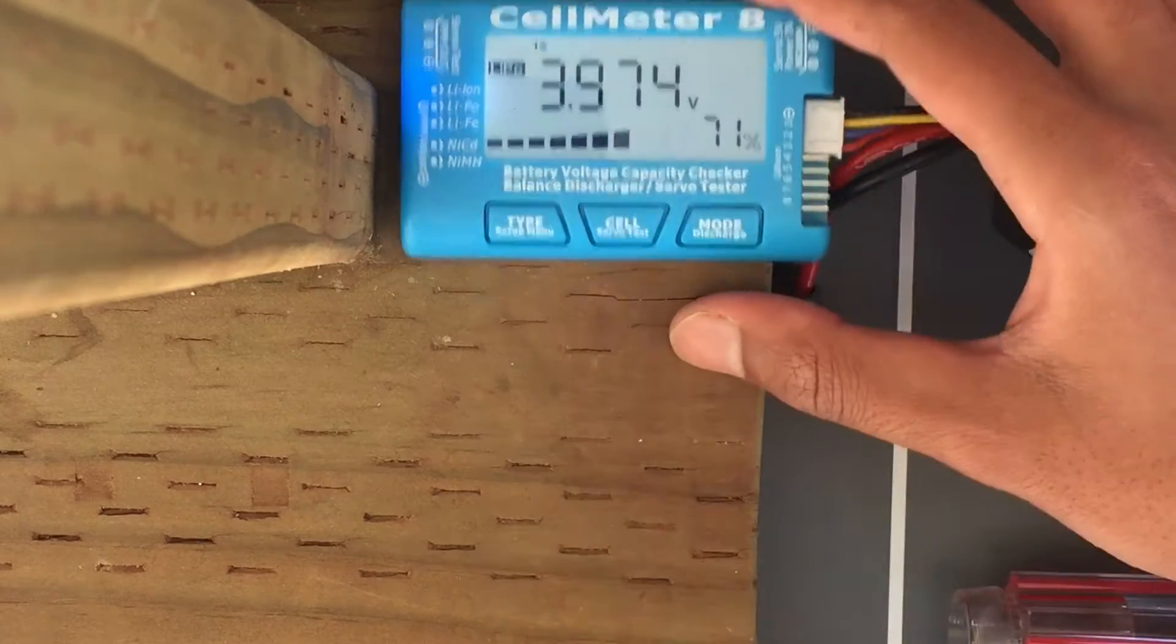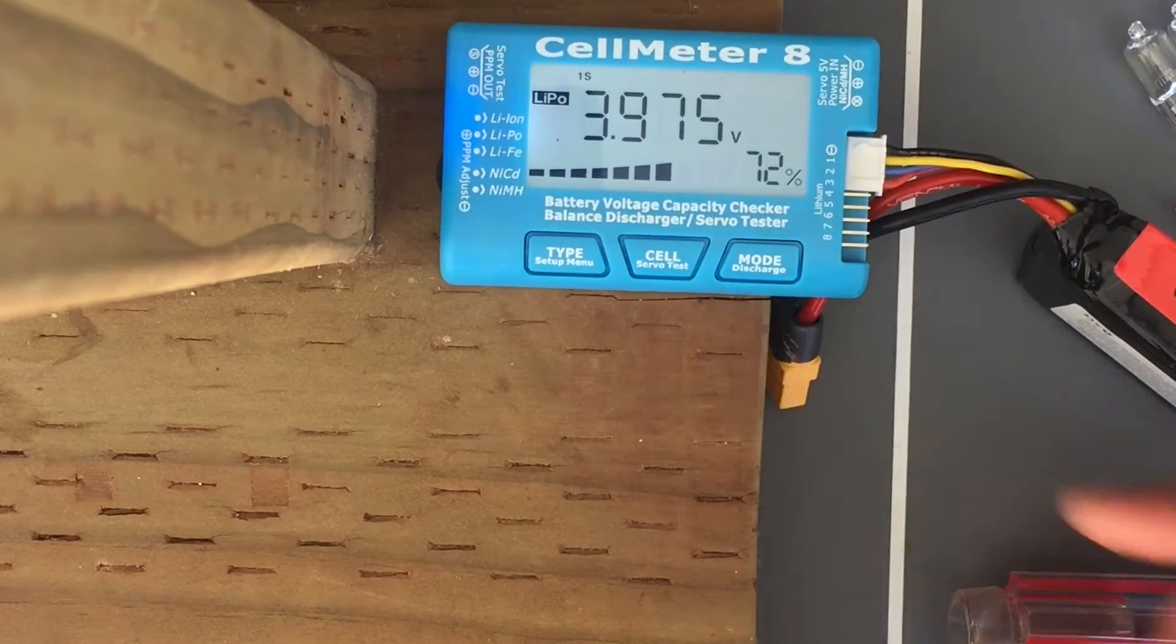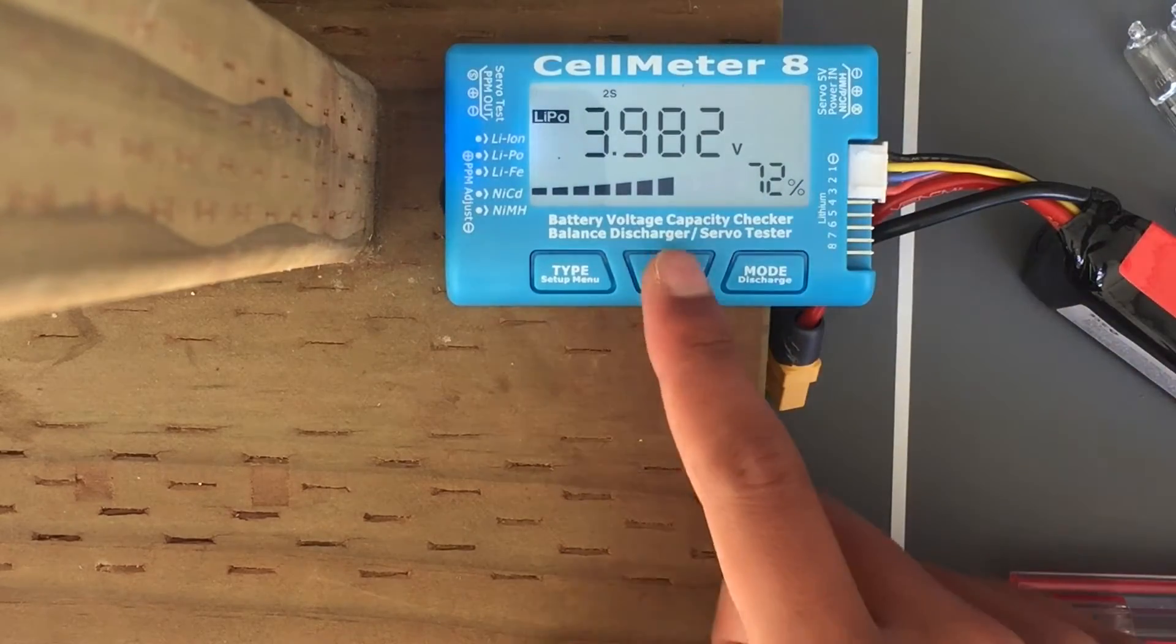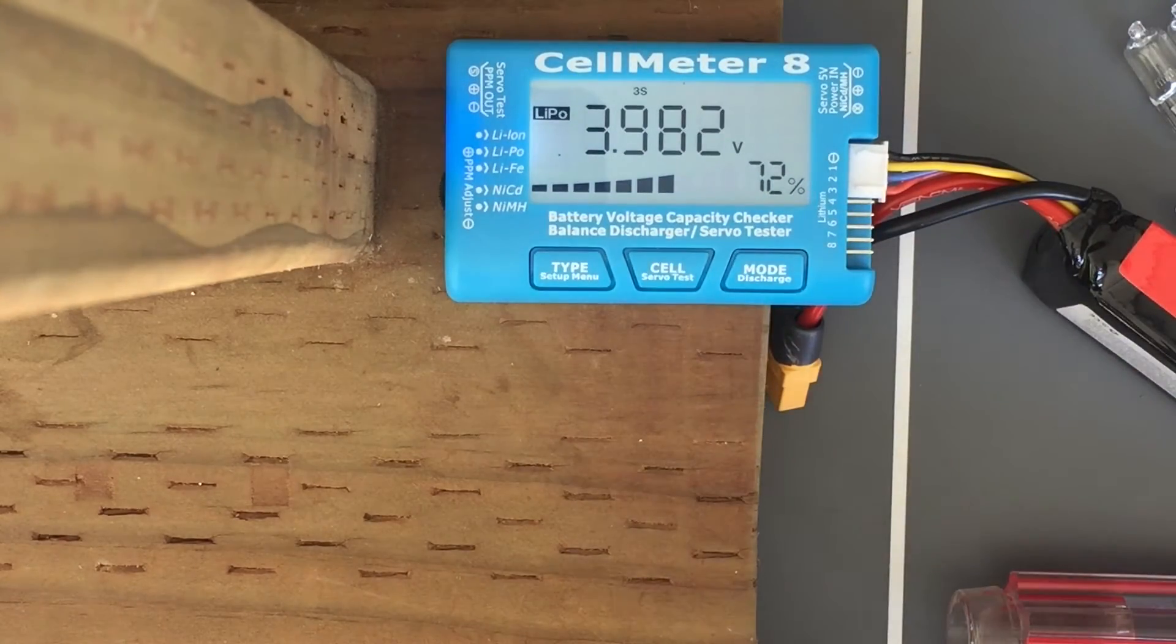If I click on 'cell,' it shows the voltage per cell. For this cell it's 3.9 volts, the second cell is also 3.9 volts, and the third cell is also 3.9 volts. This is a good sign because the battery is balanced.